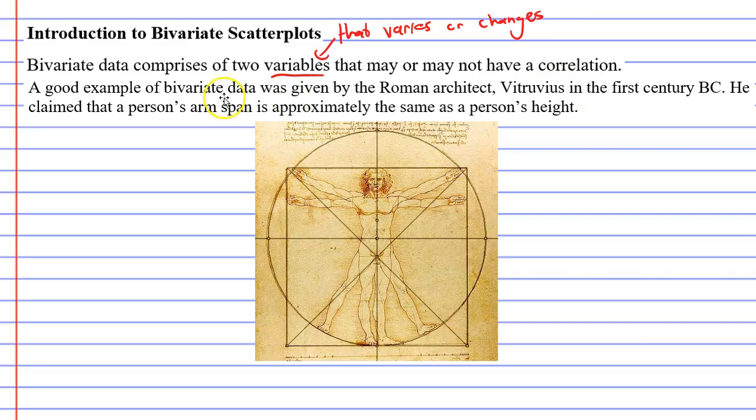We're going to explore this, and a good example of bivariate data was given by the Roman architect Vitruvius in the 1st century BC.